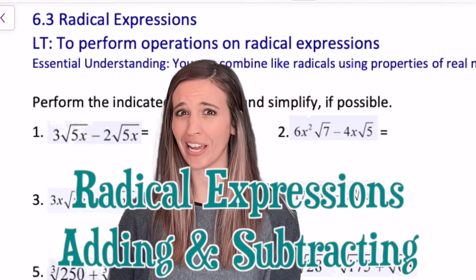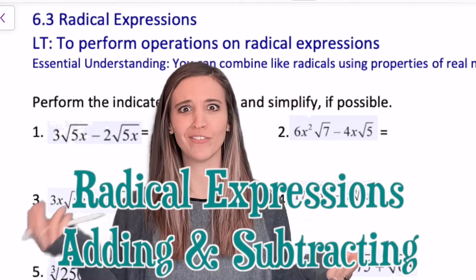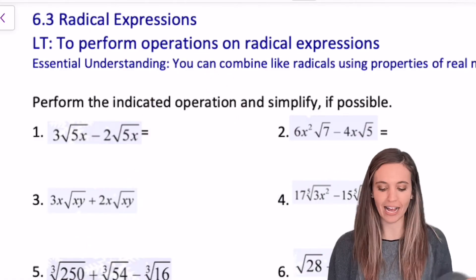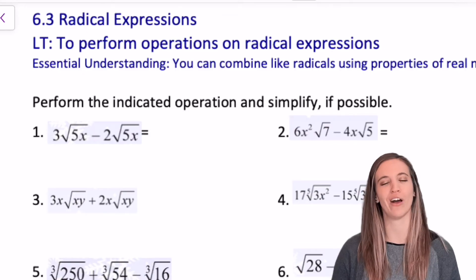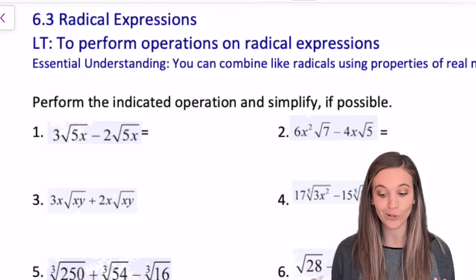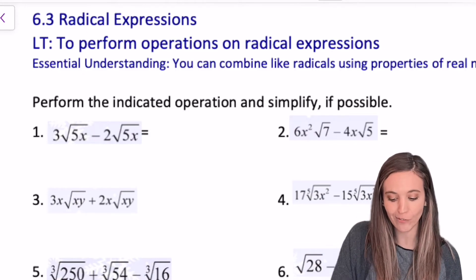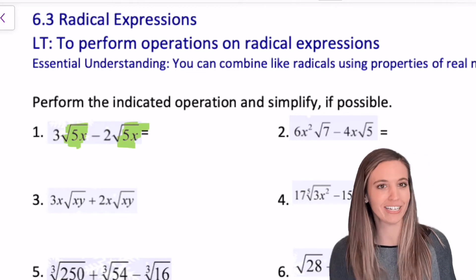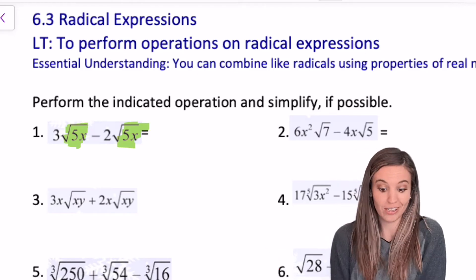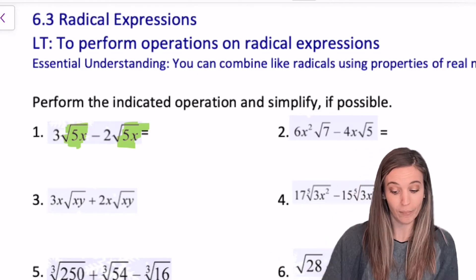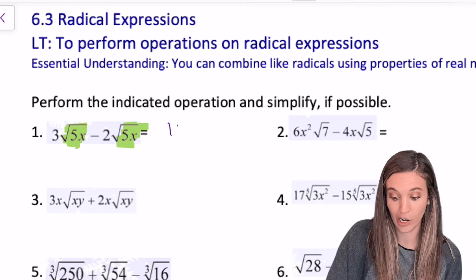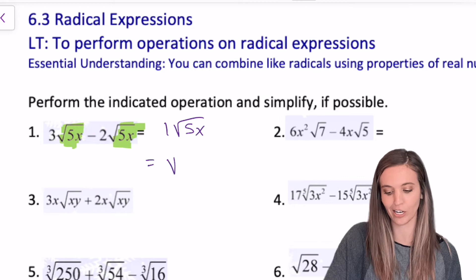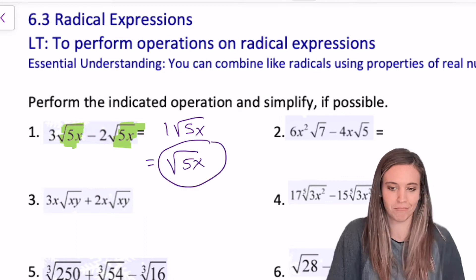Radical expressions. We've multiplied and divided, but now we need to add and subtract some radicals together. As I look at this first one, 3 root 5x minus 2 root 5x, the radicals are identical. So we can treat them like a variable. Like we would know what 3x minus 2x is, we can treat this one exactly like that. 3 minus 2 is 1, and then we just have that root 5x along for the ride. So our answer here is root 5x. No problem.